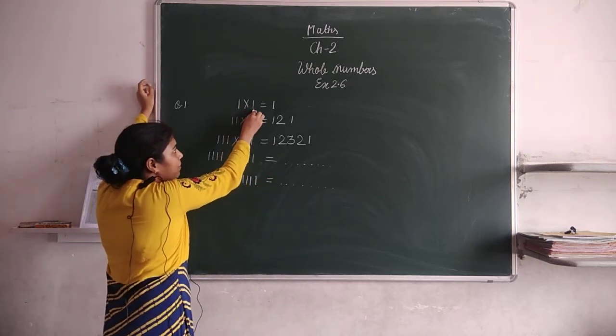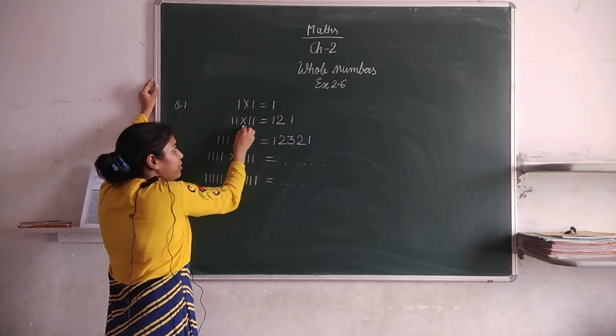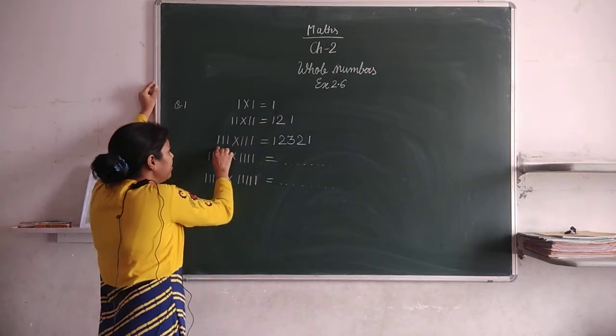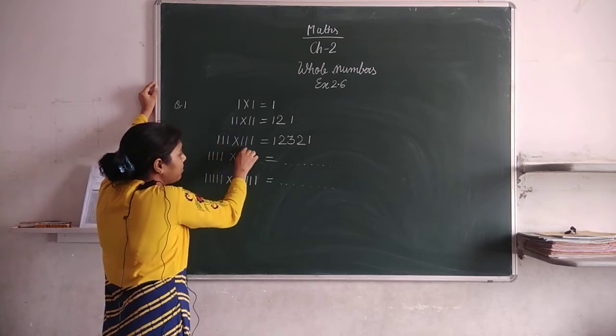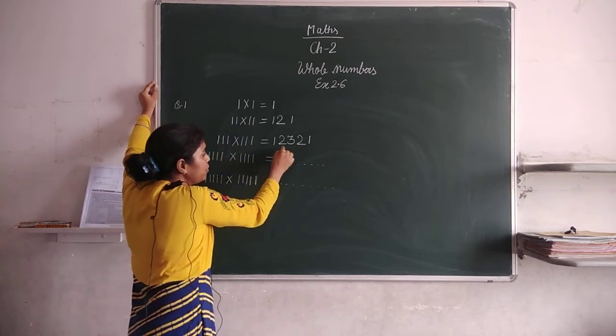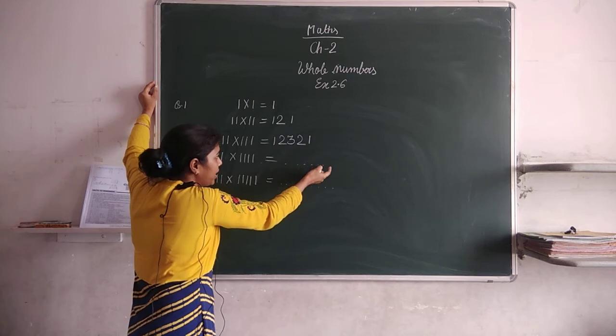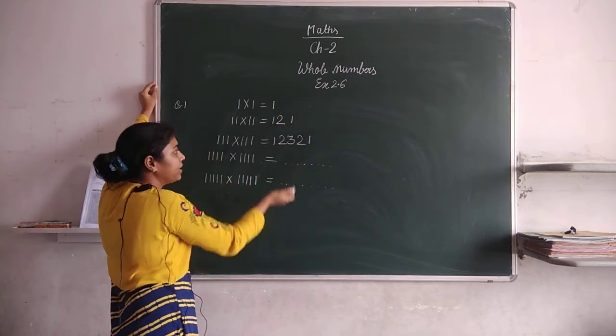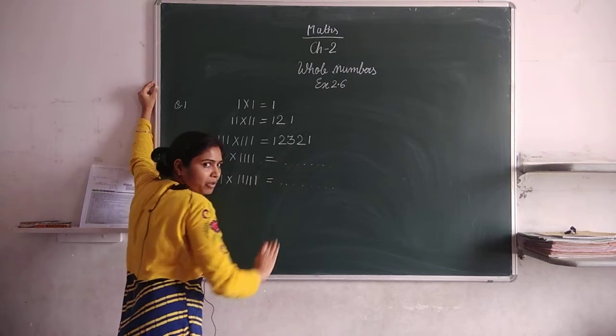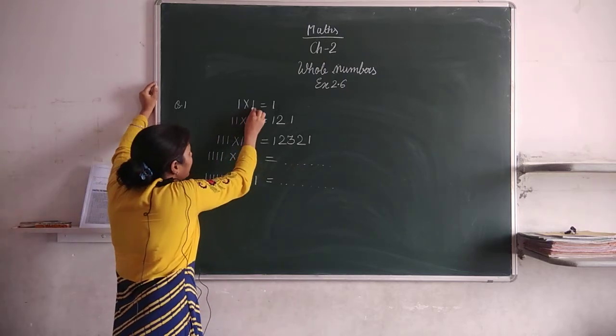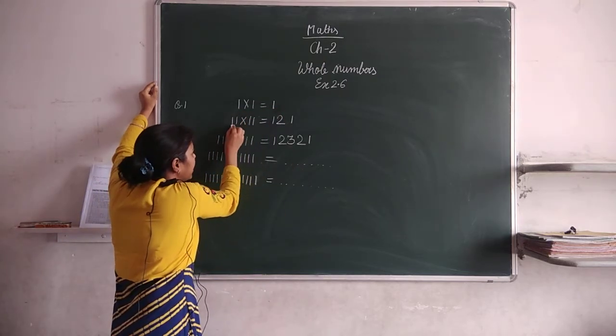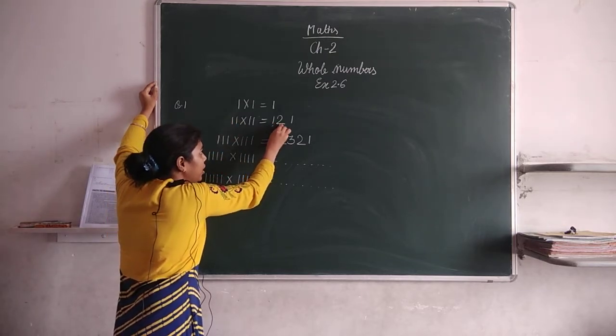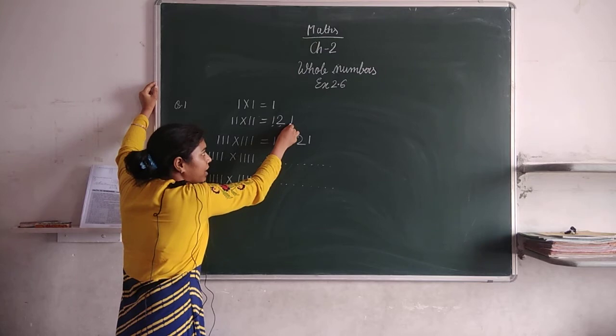First one is given to you: 1 multiplied by 1 is equal to 1. 11 multiplied by 11 is given to you 121. Then 111 multiplied by 111 is given to you 12321. Now we have to check the pattern. We will check the pattern according to the pattern. First one is 1 and 1 is given to you 2 times 1. That means we are going through 1, 2 and then reverse counting.